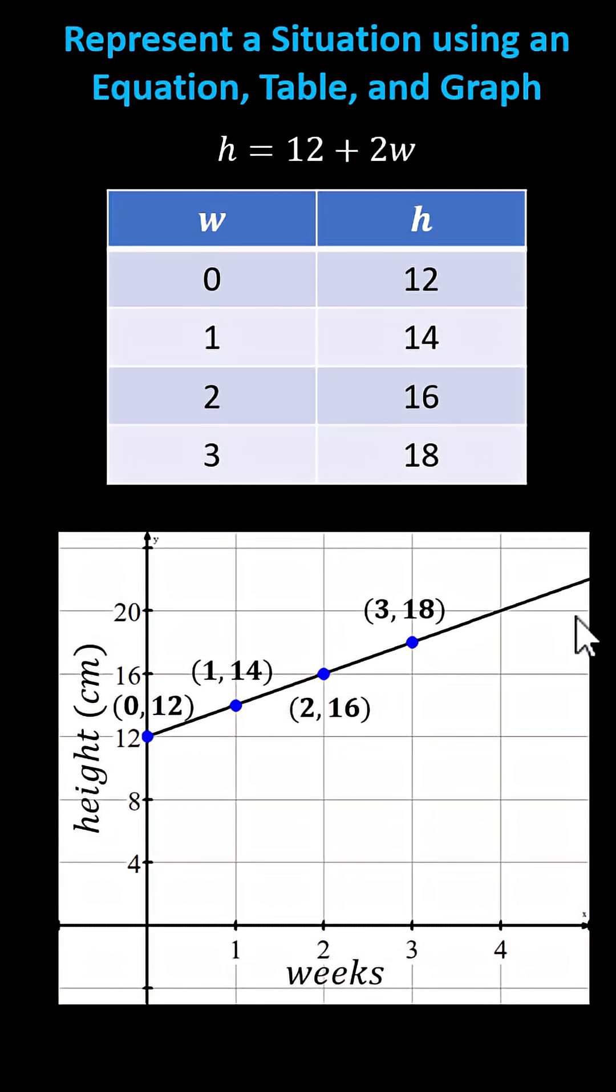And then we sketch a line passing through the four points. However, since the number of weeks can't be negative, the initial point is 0 comma 12. Then the line moves up and to the right.